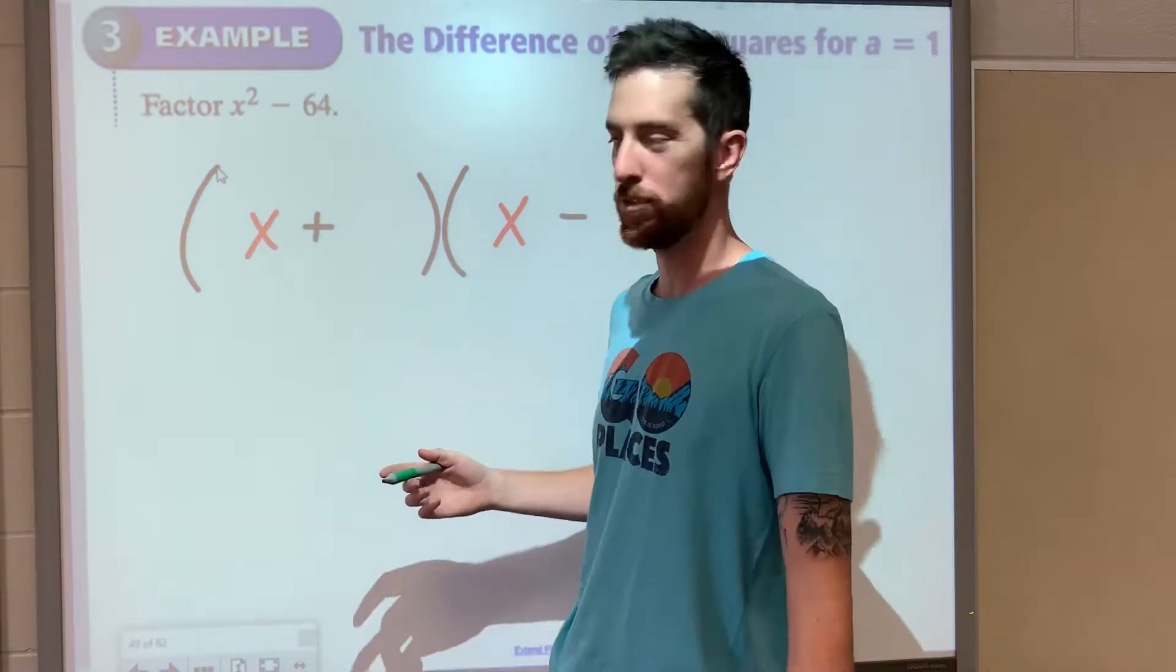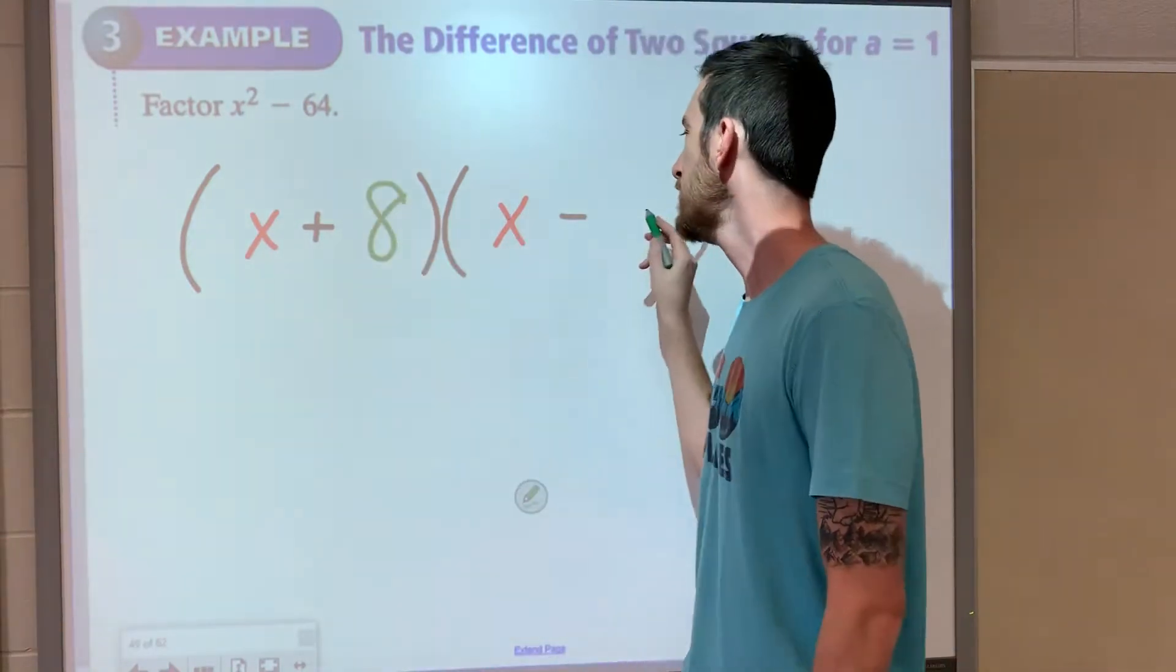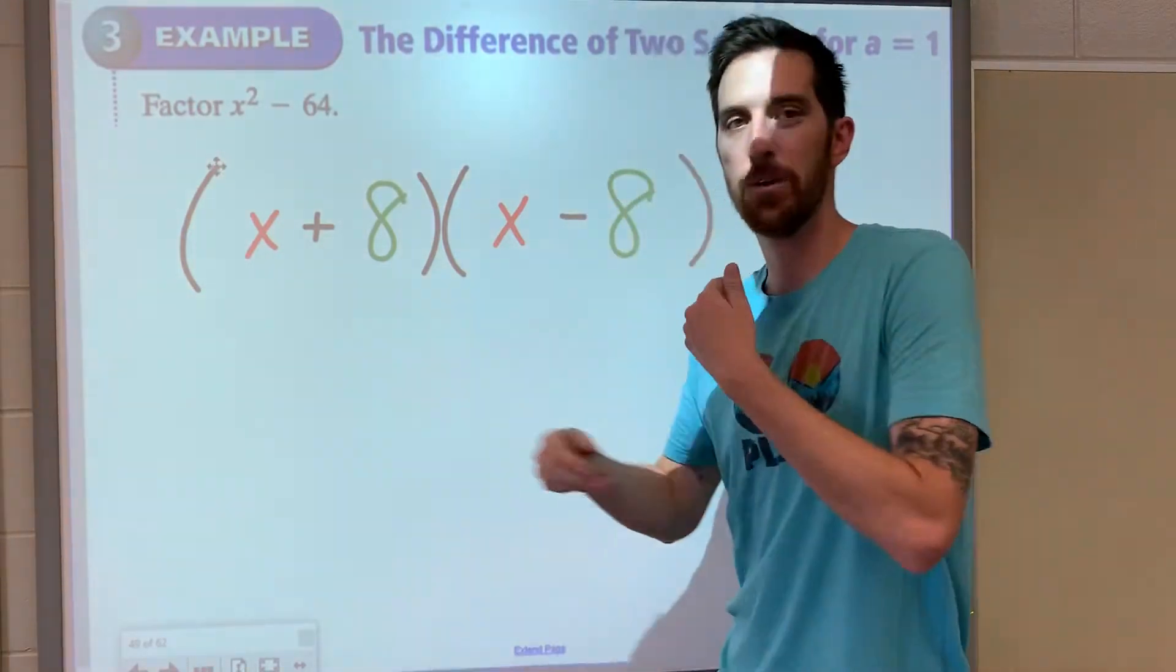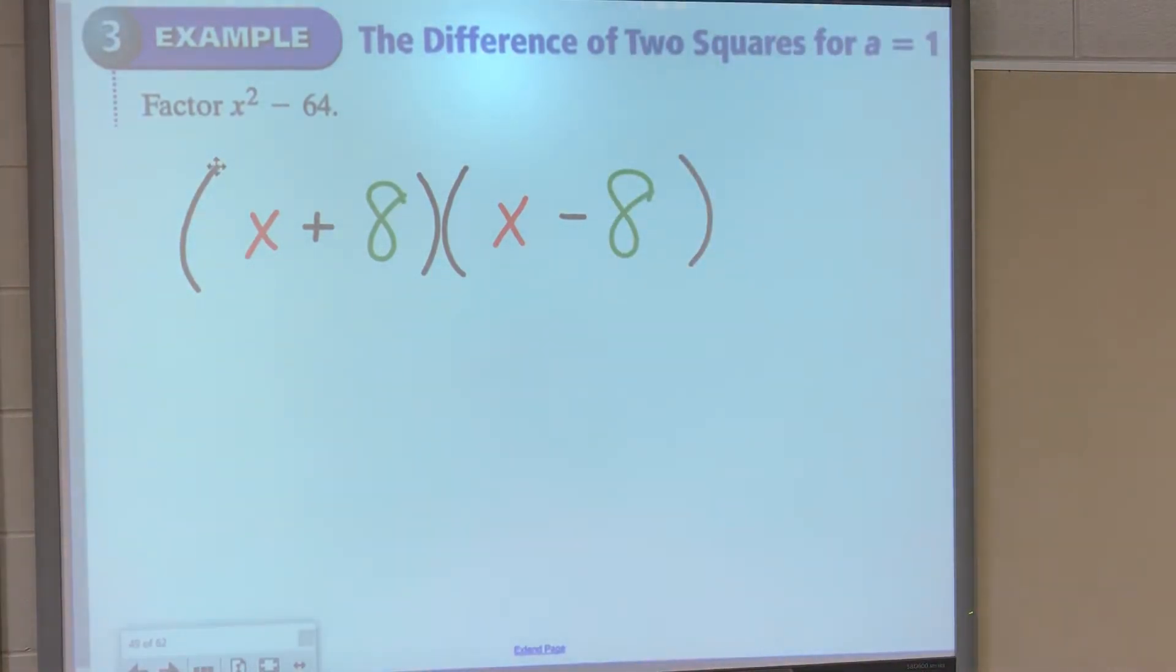What times itself gives you 64? It's 8 times 8. That's the answer: x plus 8 times x minus 8. If you FOIL that out, it still works out to x squared minus 64.